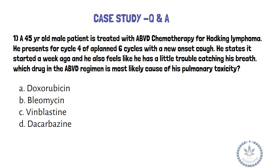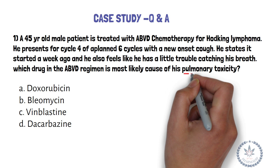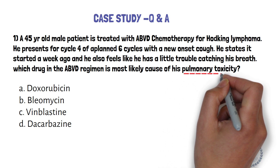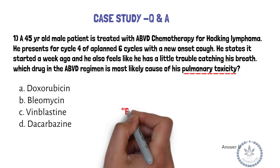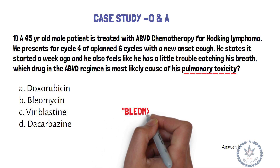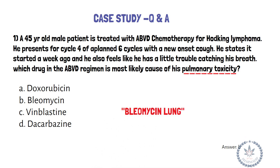Look for the key drug and specific adverse effect. I hope you are getting the answer. Read the question again and you will find the answer to the key word. The correct option is B. Pulmonary toxicity is the most serious adverse effect of bleomycin, progressing from rales, cough, and infiltrate to potentially fatal fibrosis. The pulmonary fibrosis caused by bleomycin is often referred to as bleomycin lung.